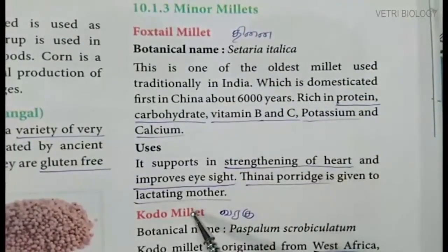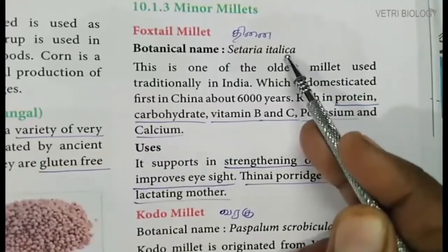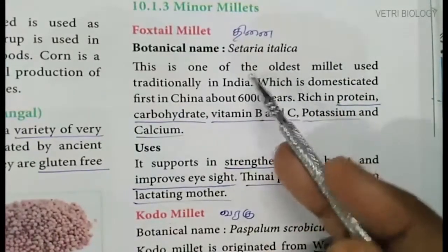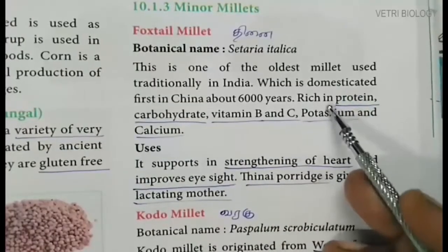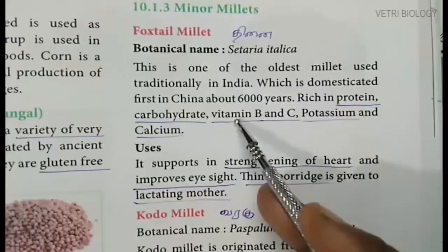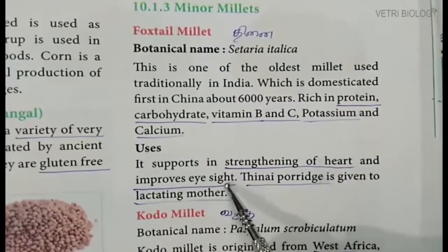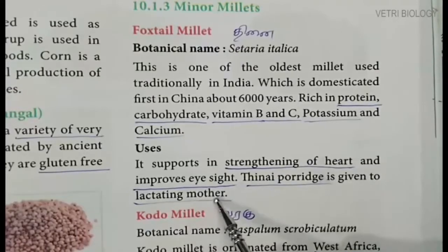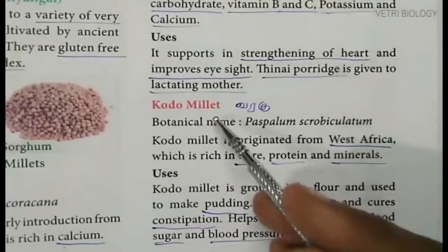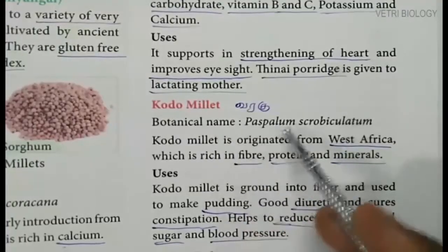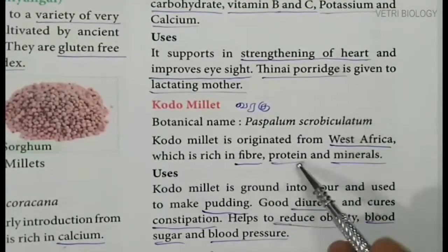Foxtail millet and kodo millet are examples of minor millets. The botanical name of foxtail millet is Setaria italica, called thinai in Tamil. It was domesticated first in China about 6,000 years ago. It is rich in protein, carbohydrate, vitamin B and C, potassium and calcium. It supports strengthening of the heart and improves eyesight. Thinai porridge is given to lactating mothers.